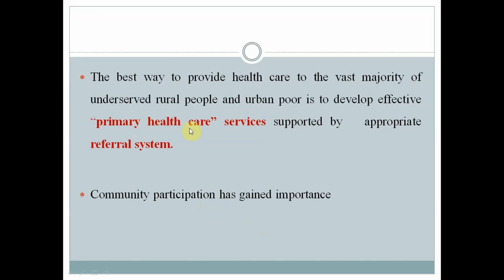The best way to provide healthcare to the vast majority of underserved rural people and urban poor is through primary healthcare services. India follows this approach because, with around 130 crore people, building sufficient hospitals and medical colleges alone is not feasible. The best approach is to provide health at the grassroot level through primary health centers and sub-centers — a concept India adopted after 1978. Primary healthcare has the big advantage of community participation.